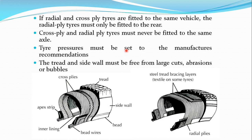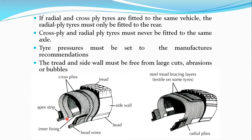Tire pressure must be set as per the manufacturer's recommendation — if it specifies 35 psi, that standard must be followed to achieve the designed tire life. The tread and sidewall must be free from large cuts, abrasion, and bubbles. Looking at the figure, you can see the tread, sidewalls, beads, bead wire, and inner liner — representing the complete anatomy of the tire, shown for both radial and bias ply (cross ply) tires.